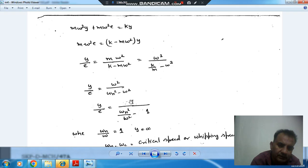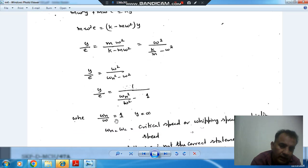So Y by E is equal to 1 by omega n square divided by omega square minus 1. And if omega n by omega is 1, or you can say the natural frequency of the system is equal to the speed of the shaft, then Y will become infinite. And that speed of the shaft or rotor is called critical speed of the shaft.